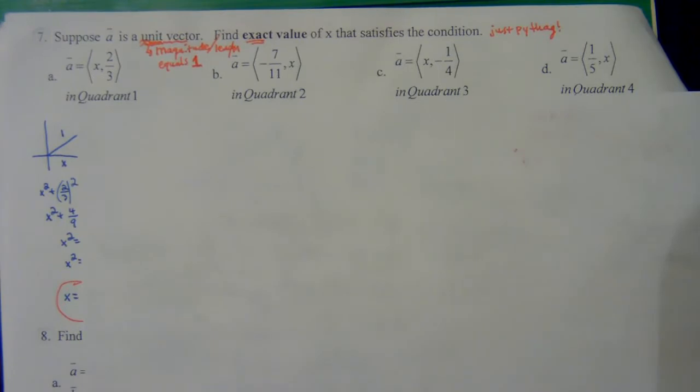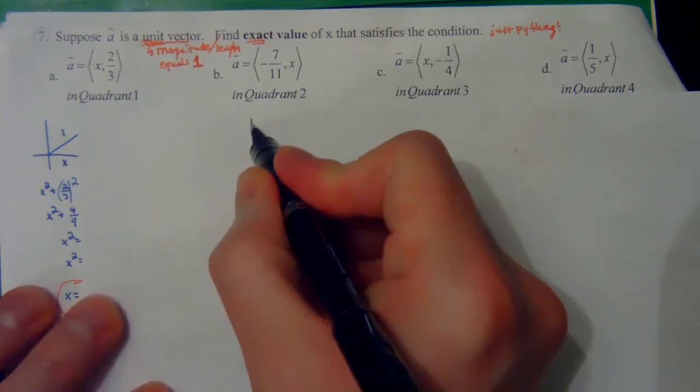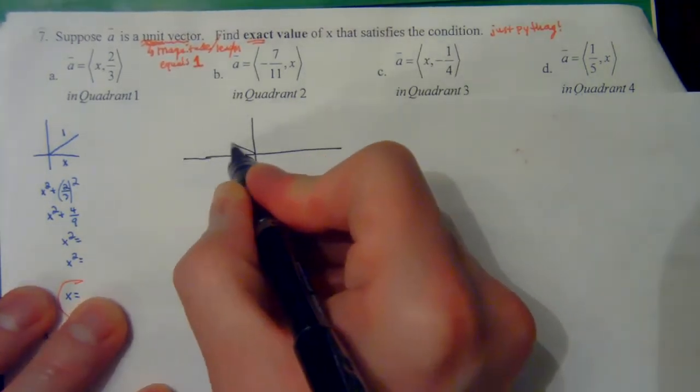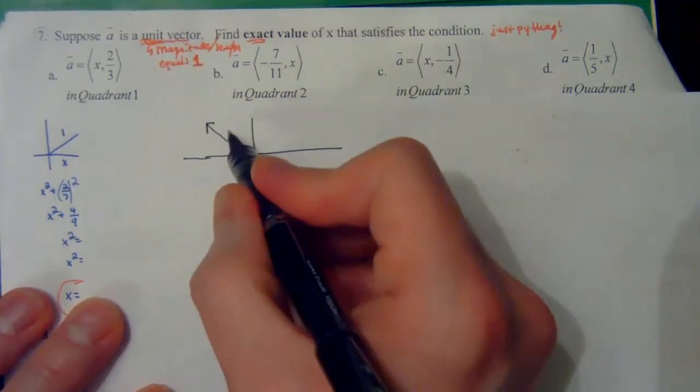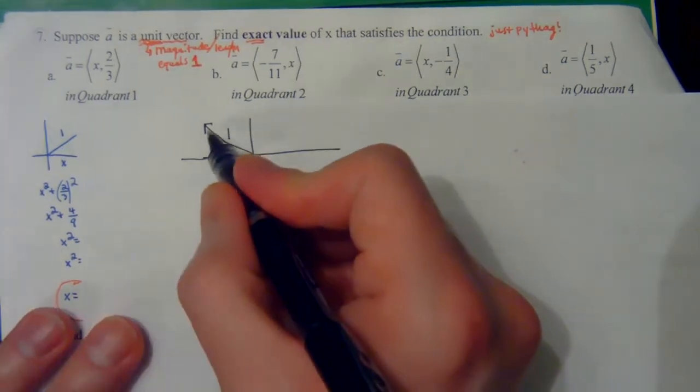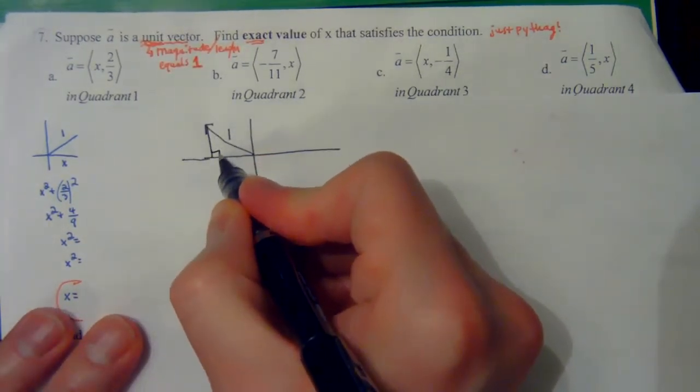Let's do B and C real quick. For quadrant two, I'm going to draw a vector in quadrant two—just draw an arrow there. That says it's a unit vector, which means it has a length of one. You're always going to draw your triangle perpendicular to the x-axis. We're given the x value is negative 7 over 11.